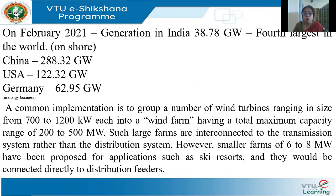Onshore means on land. There are offshore wind farms as well — out in the sea or ocean you get very good wind — but India does not have offshore wind plants yet. The largest producer of wind power is China, with around 288 gigawatts. Next is USA with about 122 gigawatts, then Germany with around 63 gigawatts, and India stands in fourth place.